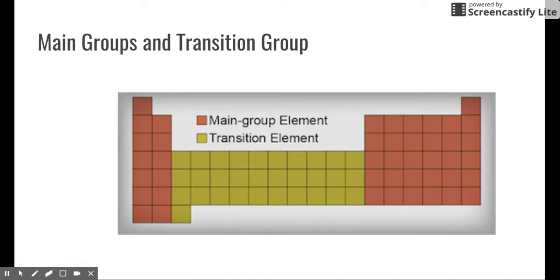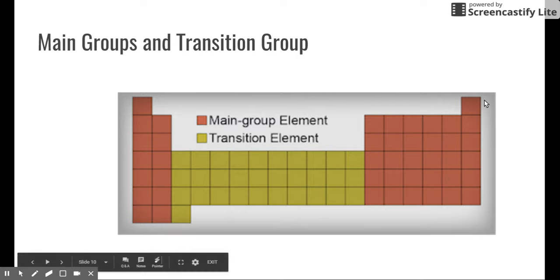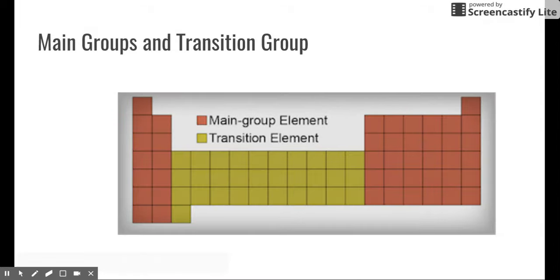Another definition you might want to be aware of is main group elements versus transition elements. Now take a look at this key, this periodic table here. Again, colors are a little bit different, but this is pointing out that the main group elements are these red ones, and the transition elements are the orange ones. The periodic table is really unique in its shape. If you look, there's kind of these turrets. I've heard it mentioned that this looks kind of like a castle, and there's these castle turrets that stand up a little bit higher than the others. Those are the main group elements, so these red ones that stand up tall.